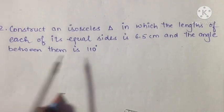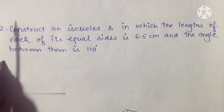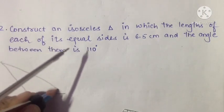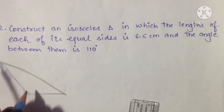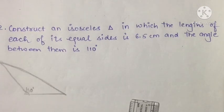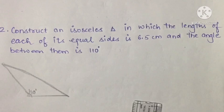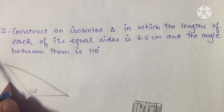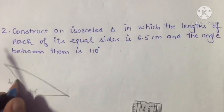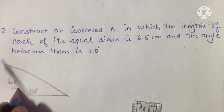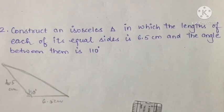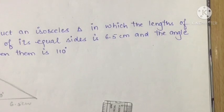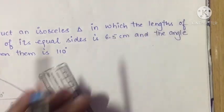The construction will be like this: the angle will be 110 degrees, and the two equal sides are 6.5 cm each. Let us begin the main construction.